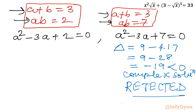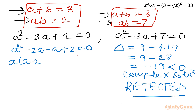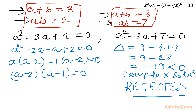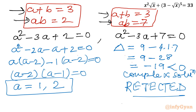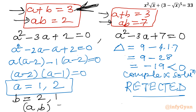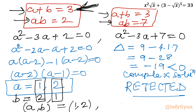Now for System 1: a² - 3a + 2 = 0. Factoring: a(a - 2) - 1(a - 2) = 0, so (a - 1)(a - 2) = 0, giving a = 1 or a = 2. Since a + b = 3, when a = 1, b = 2, and when a = 2, b = 1. So the ordered pairs (a, b) are (1, 2) and (2, 1).